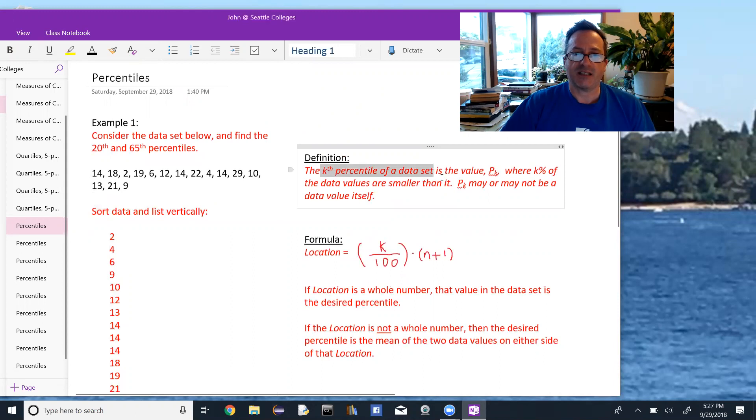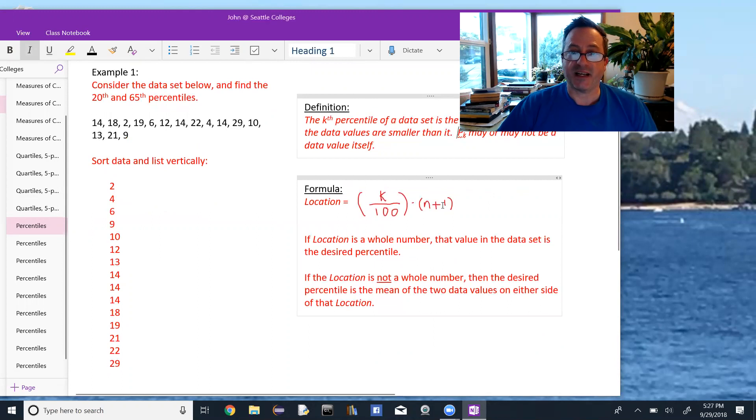The kth percentile of a data set is the value, we write it p sub k, so the p is big, the k is a subscript, where k percent of the data values are smaller than it. P sub k may or may not be one of the data values itself.